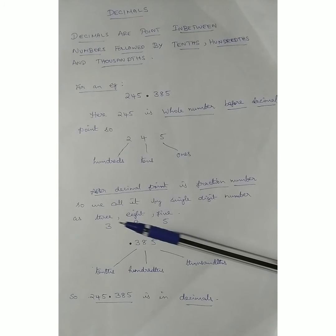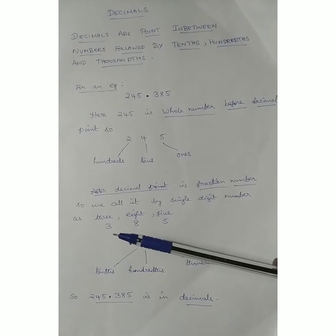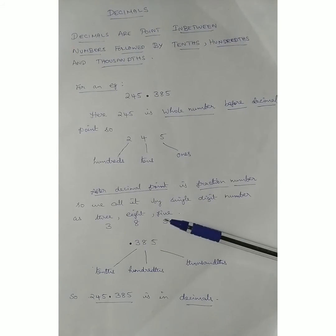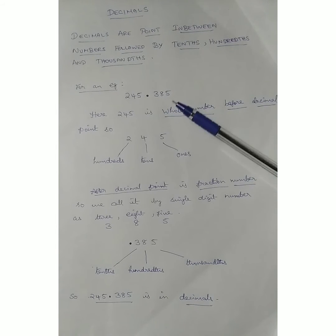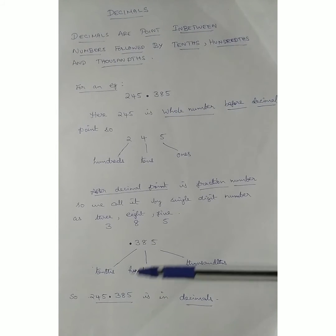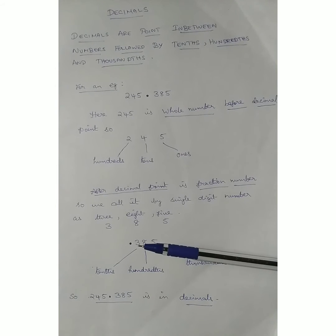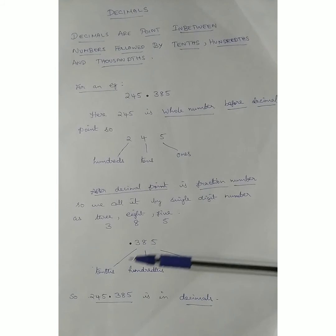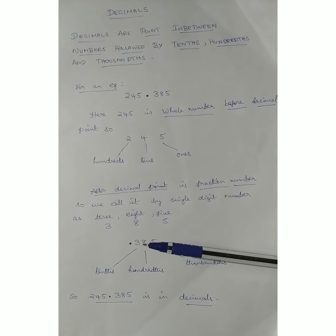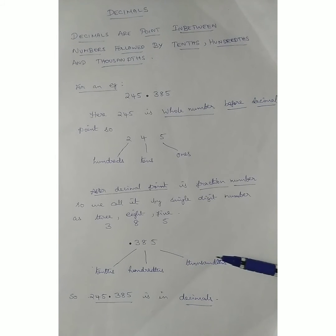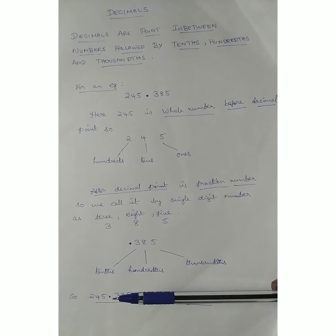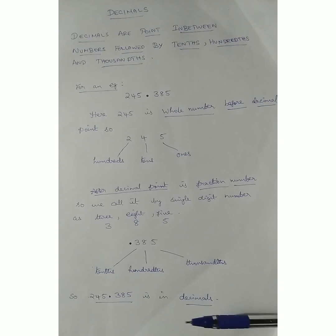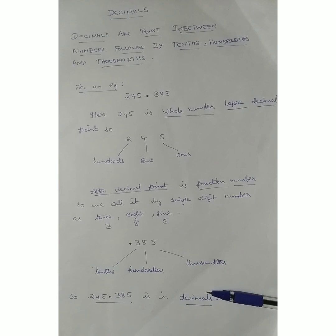We call the fraction part by its single digit number: 385. After the decimal point, three is in the tenths place, eight is in the hundredths place, and five is in the thousandths place. So 245.385 is our example in decimals.